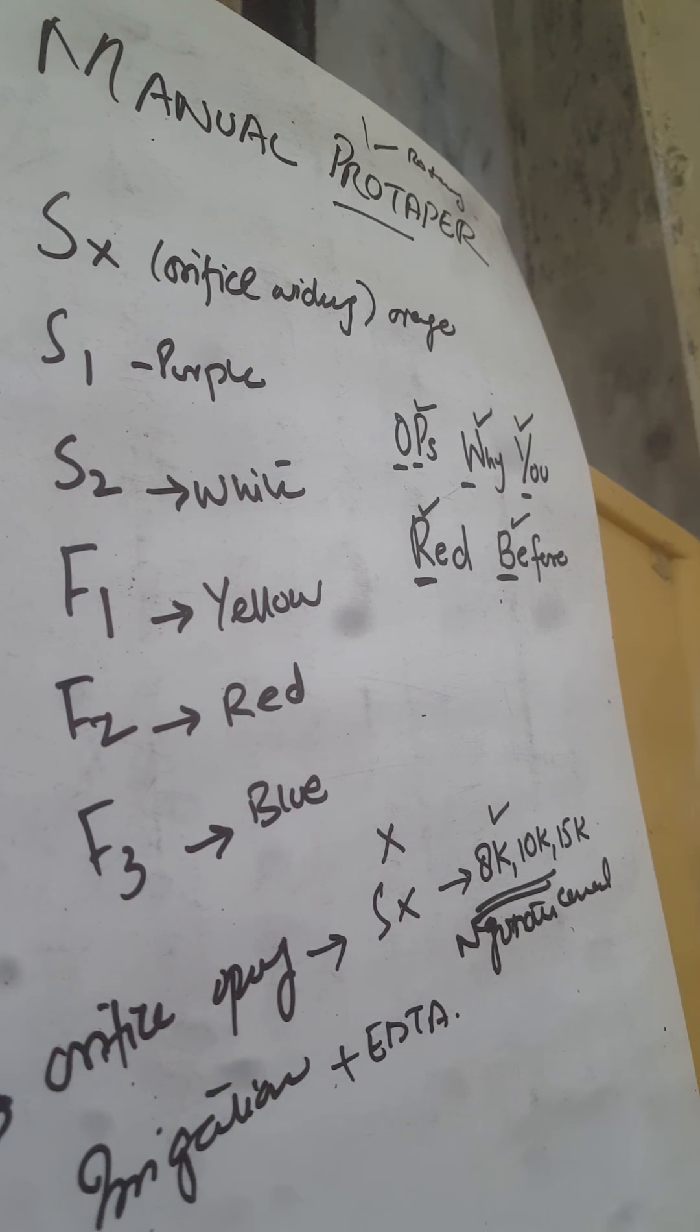After negotiating the canal, we use the sx file, then again we use the working length file, might be 20k or 25k, then s1, then again 20 or 25k file. Again we use s2, again we do 25k. This is a recapitulation system. We have to recapitulate so that we might not lose our working length.